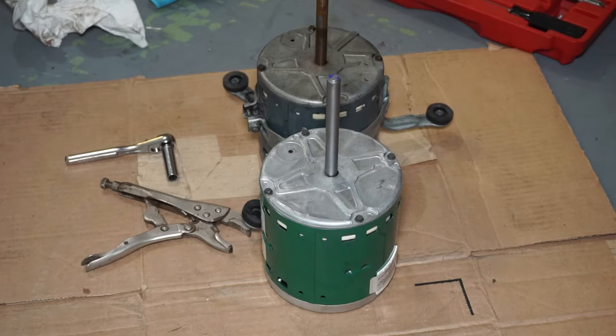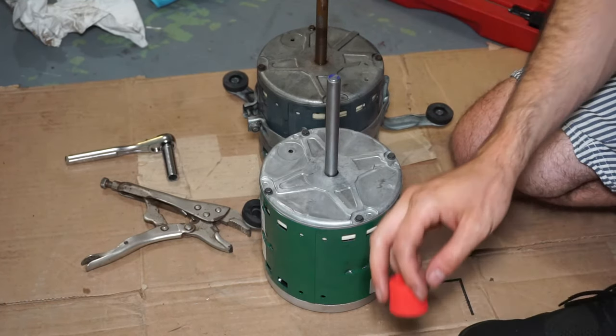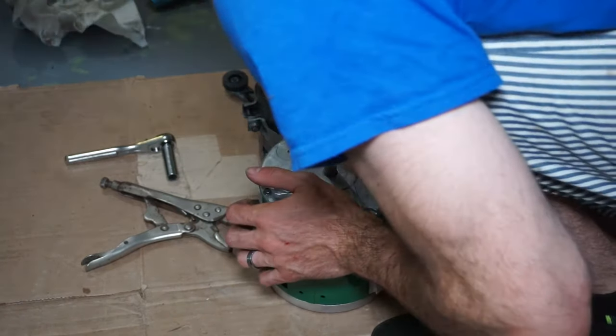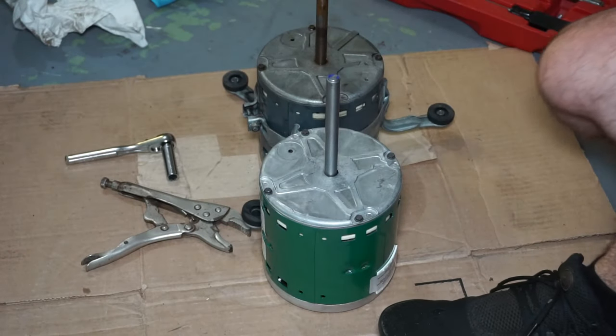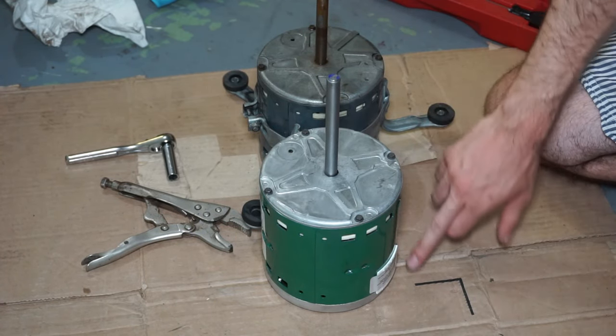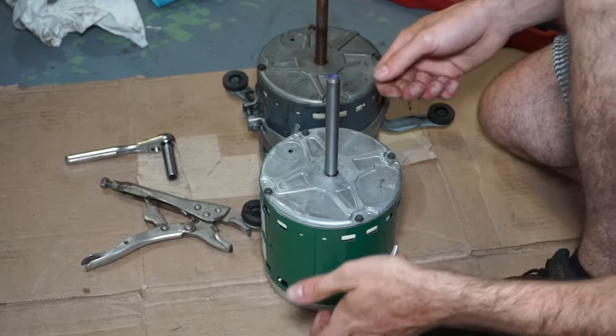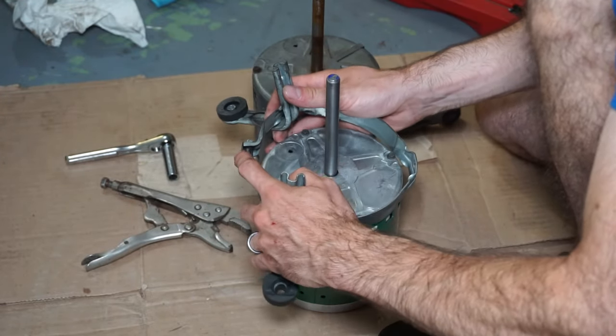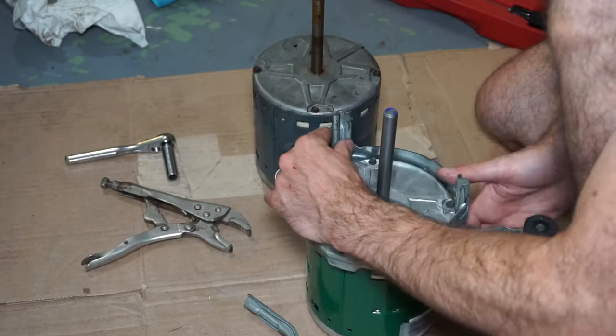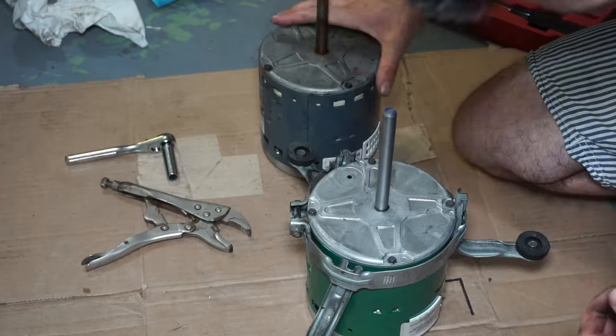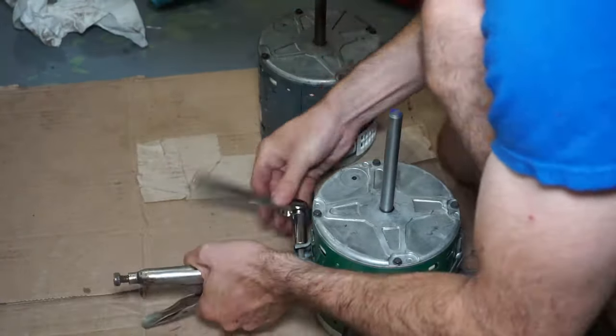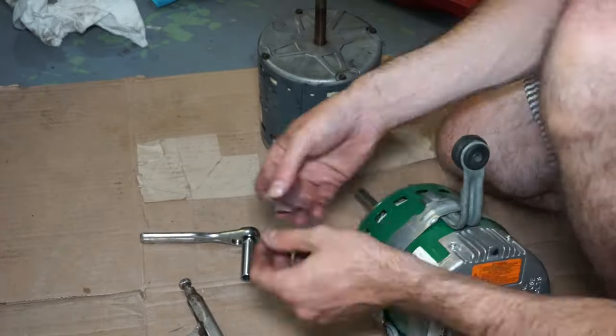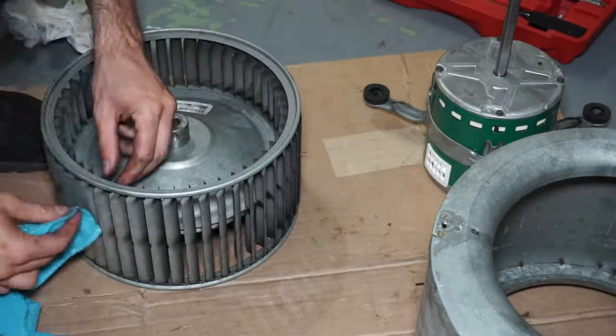So basically what we're doing right now is we're taking the belt, the quote-unquote belt, off of the old motor and putting it on the new motor. One thing that it recommended was to position the motor exactly like the old motor. So I've got the connections right here on the bottom left. Just basically take the mount off and stick it on the new one. This entire clip is me putting the motor mount on the motor and then also cleaning the blower fan blades in preparation for reinstallation.